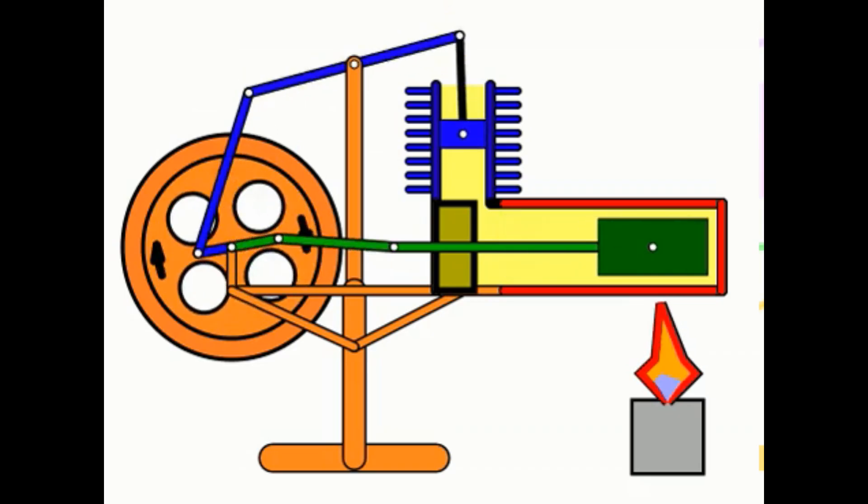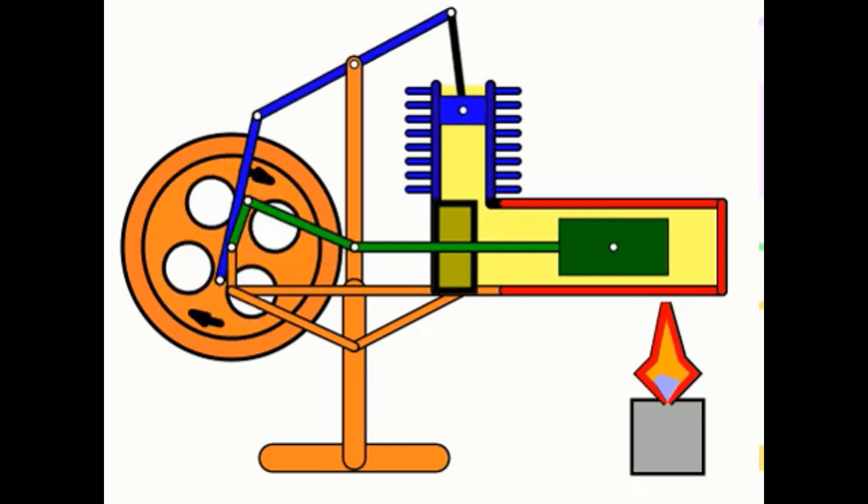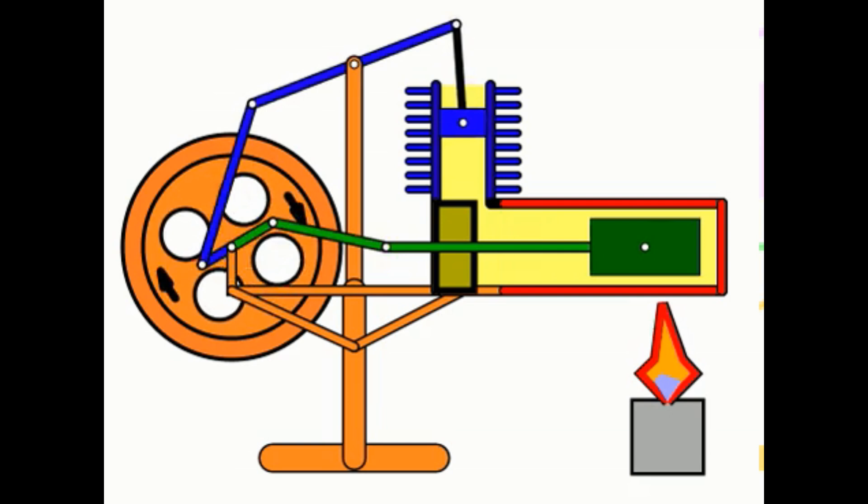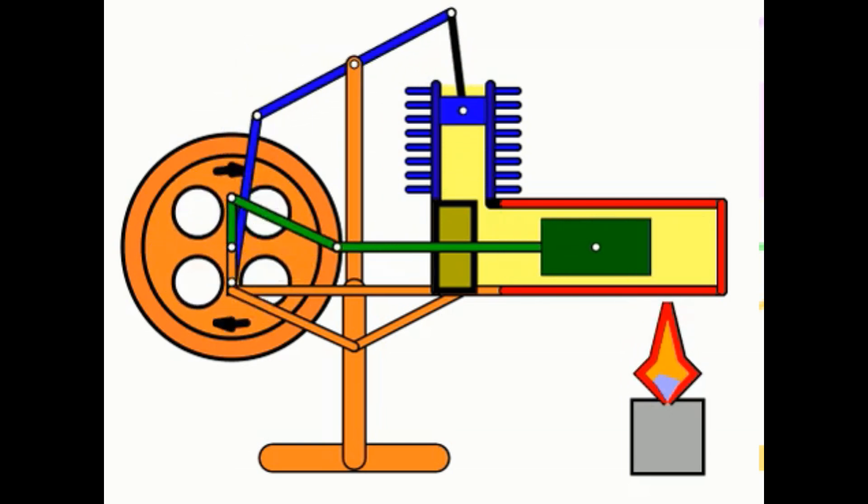Here's another orientation of the gamma engine showing kind of the crazy linkage that you need to pull this off. It also shows the clearance of the displacer cylinder a little more clearly.